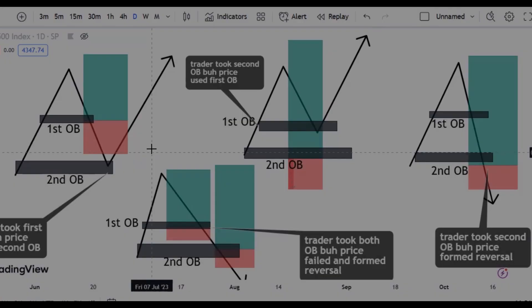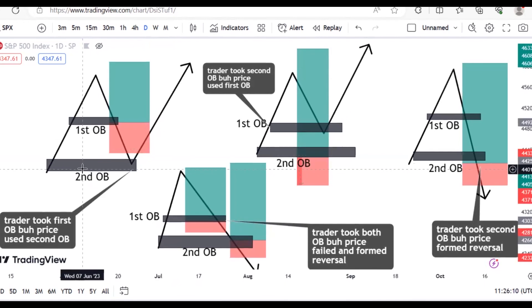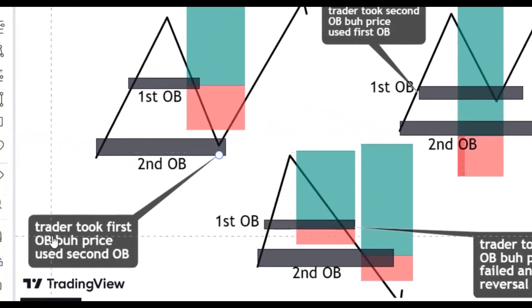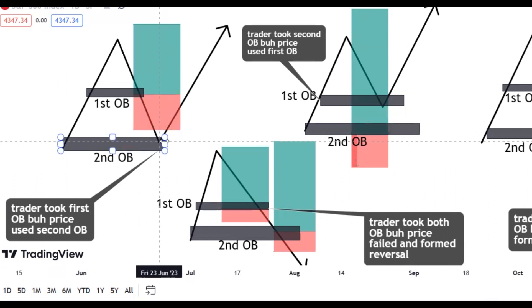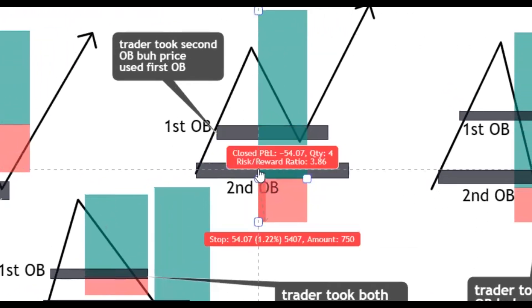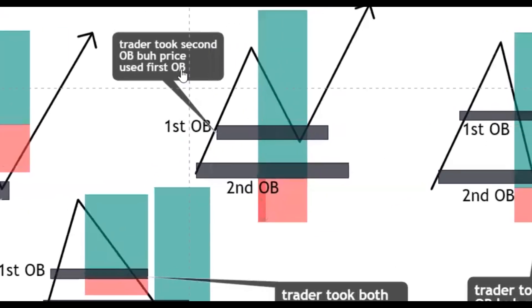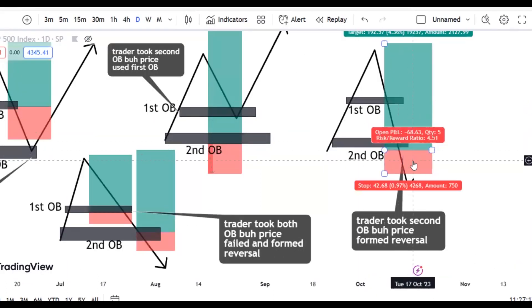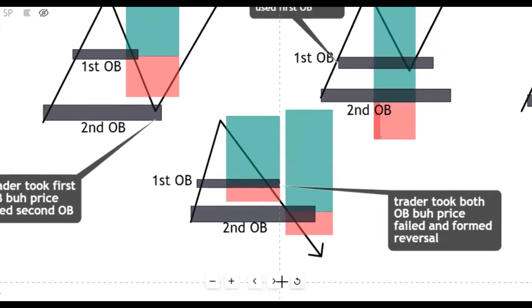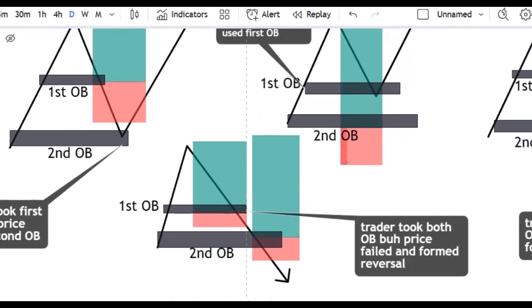Hello friends, welcome back to the channel. These are the various cases you are going to experience when dealing with order blocks or any POI. The first case is a trader took the first trade on an order block, but price used the second order block. You place a pending order somewhere, price drops lower, takes you out, then continues to the second order block. The second case is you place a pending order and price didn't even get to the order block — instead price uses the first order block and keeps pushing to the upside, trading to a second order block. There's a way we can avoid these reversals instead of taking unnecessary losses.